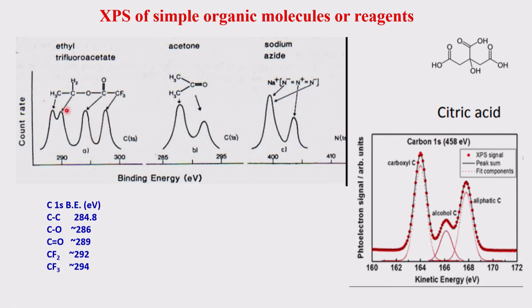Within the carbon 1s range there are 4 peaks: lowest binding energy, slightly higher, still higher, and highest binding energy. Looking at the molecule, the CF3 carbon has three fluorines withdrawing electron density, making it more positive — so it has the greatest binding energy. The carbon attached to two oxygens (carboxylate) comes next. The carbon attached to one oxygen is next, and CH2 with no oxygen has the lowest binding energy. More electronegative groups attached means greater positive charge on that carbon nucleus, hence greater binding energy.